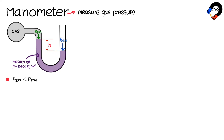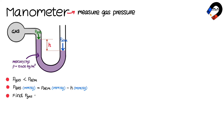Therefore, the gas pressure in millimeters of mercury equals the atmospheric pressure in millimeters of mercury minus h millimeters of mercury. For example, to find the gas pressure in pascals when h = 100 millimeters, atmospheric pressure is 10⁵ pascals,